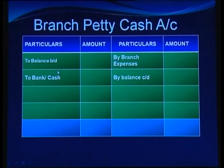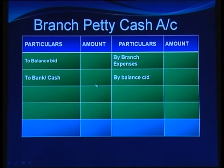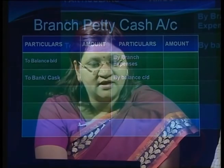The branch petty cash account also starts with the opening balance. Expenses paid out of petty cash are recorded, and any cash sent to the branch is entered as Petty Cash Account debit to Bank. The balancing figure on the credit side reflects the closing balance of the petty cash account.